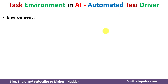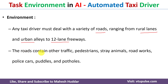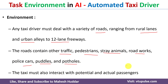The second component is the environment. The environment for an automated taxi driver includes a variety of roads ranging from rural lanes to urban traffic as well as highways. The automated taxi driver also has to deal with other traffic, pedestrians, stray animals, road workers, police cars, puddles, potholes, and so on. Additionally, the taxi driver must interact with potential and actual passengers — those sitting in the car — and drive based on their input. This is the second component of task environment: environment.